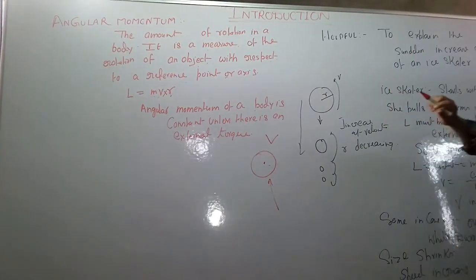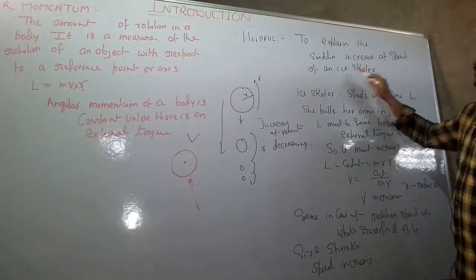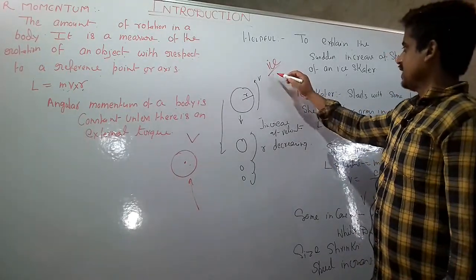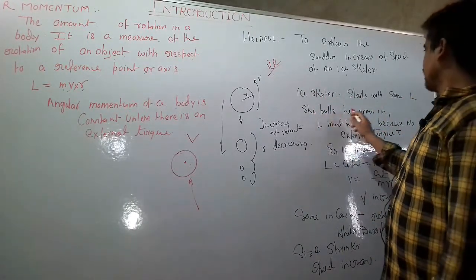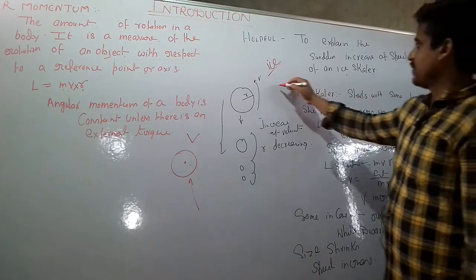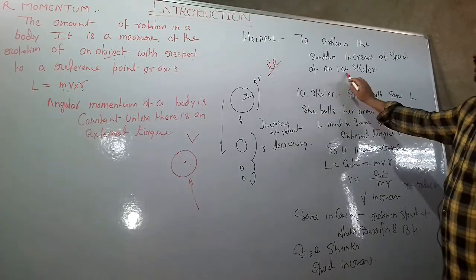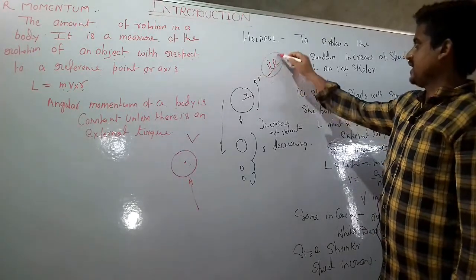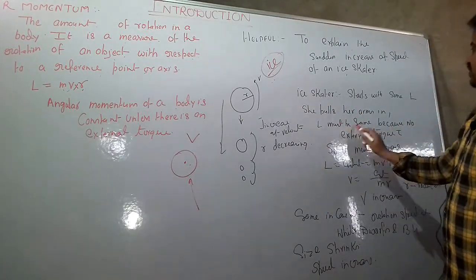The concept of angular momentum is helpful to explain the sudden increase in speed of an ice skater. An ice skater starts with some angular momentum at an initial rotating speed. When she pulls her arms in, there is a sudden increase in her rotational speed. The reason is that the ice skater is a closed system with no external torque acting on it, so angular momentum L must be conserved.